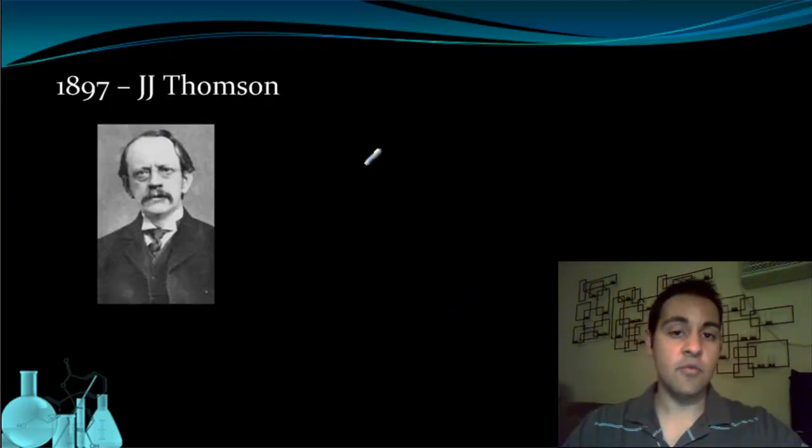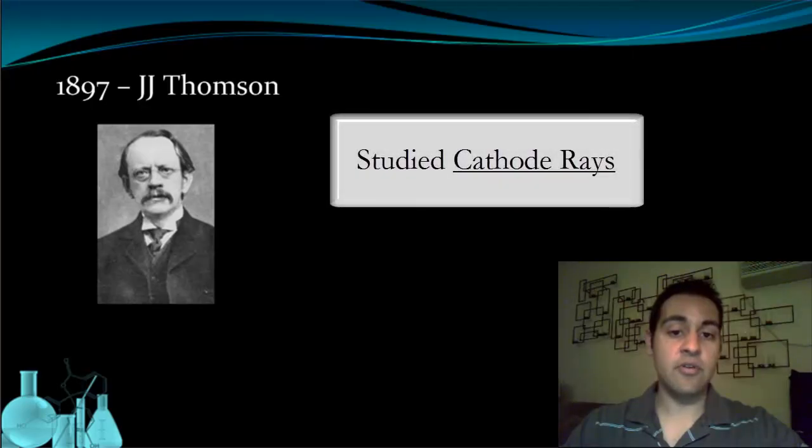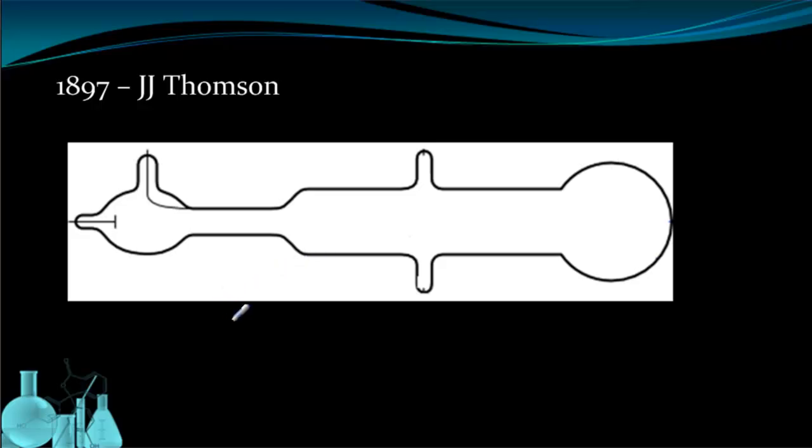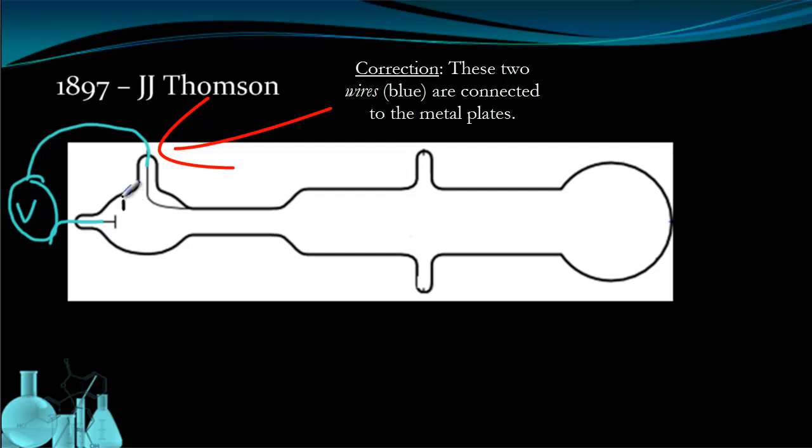He studied cathode rays with a device called a Crook's tube, which looks like this. Now a Crook's tube, we're going to talk about very quickly how it works and then what he learned from the Crook's tube. So basically in this tube, this space in between was filled with a small amount of gas. And here and here, we could hook this up to a power source. These two voltage sources would be connected to one metal plate on this end and one metal plate on this end.